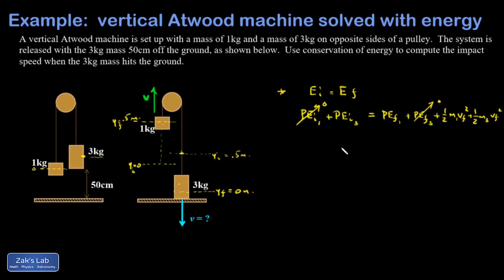All right, so plugging in the formula that the potential energy is Mgy, I'm going to have, I'm just going to go ahead and put in numbers now. Initial potential energy of the three kilogram mass, that's Mgy. And then the final potential energy of mass one is going to be a one kilogram. That's Mg. And it's now at a height of 0.5.